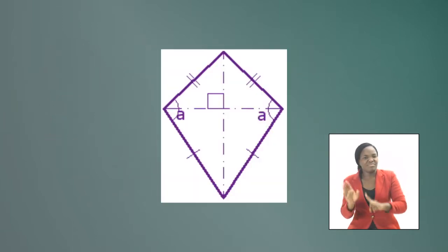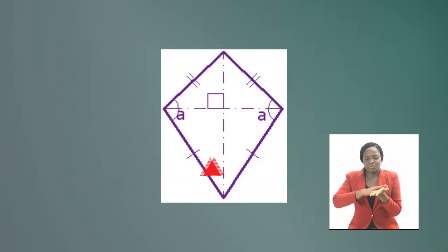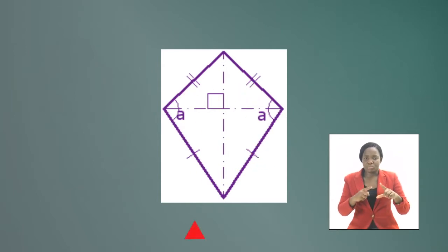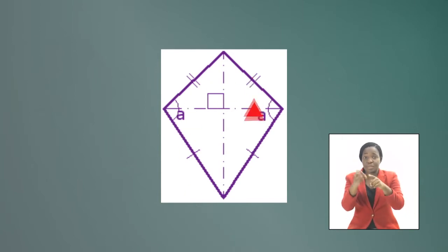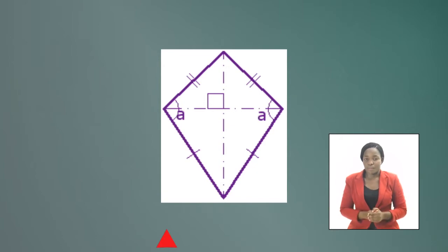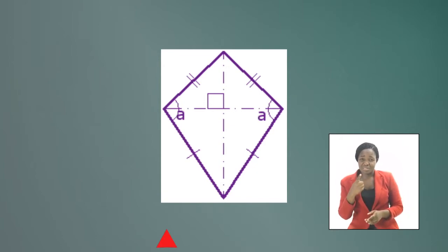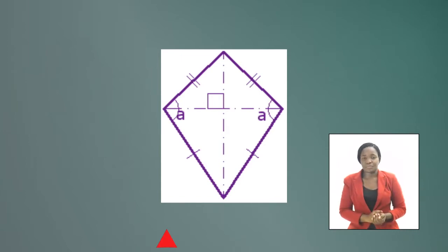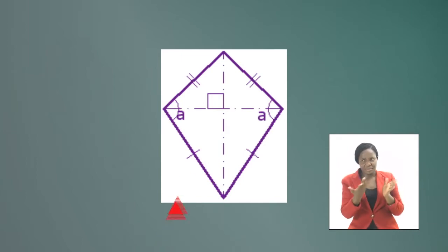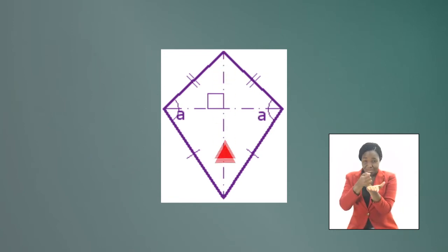A kite is a flat shape with two pairs of equal adjacent sides, meaning the sides next to each other are the same length. There are two short sides and two long sides. A kite can also be described as a quadrilateral with one line of symmetry along one of its diagonals. It is possible to draw a line straight through a kite so that the left side will be identical to the right side.